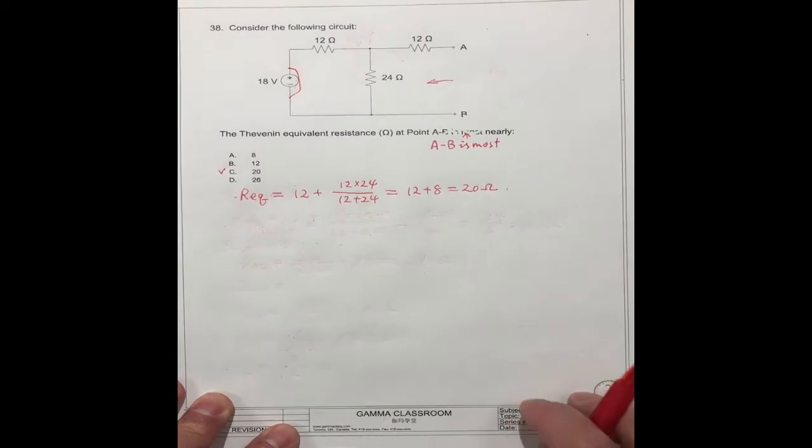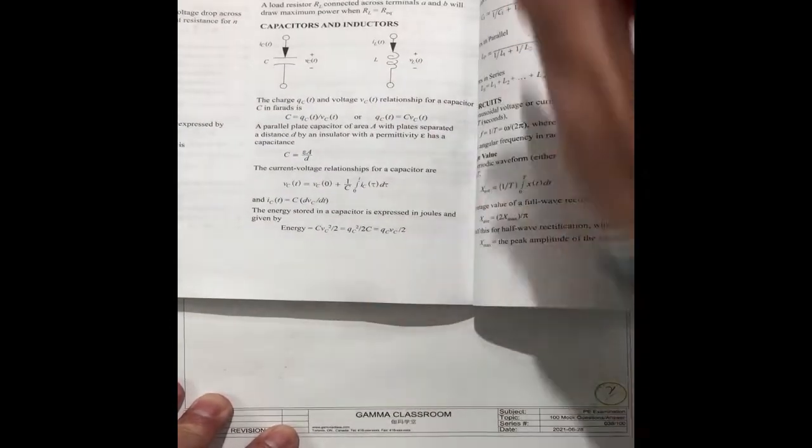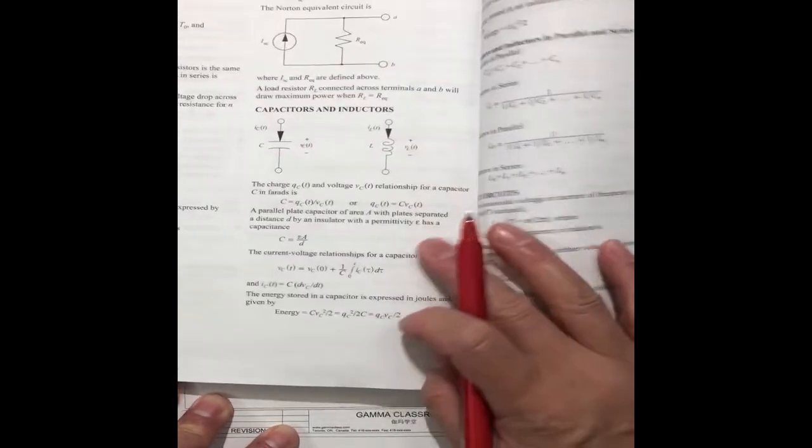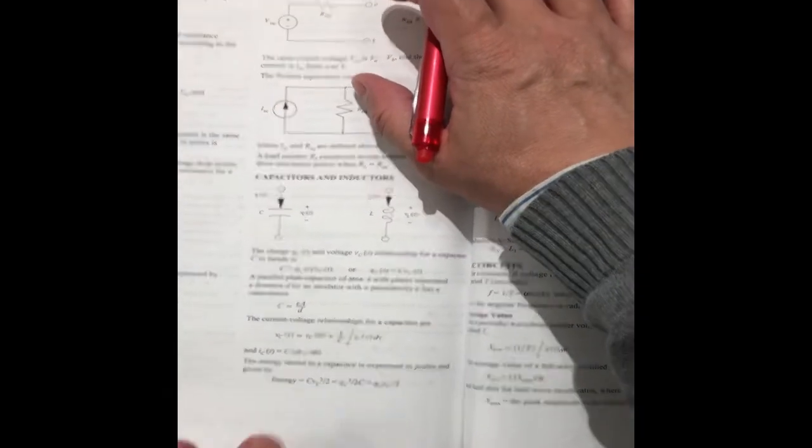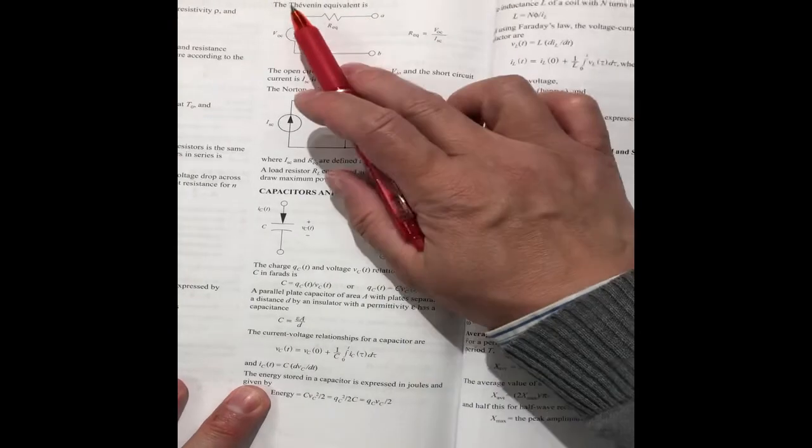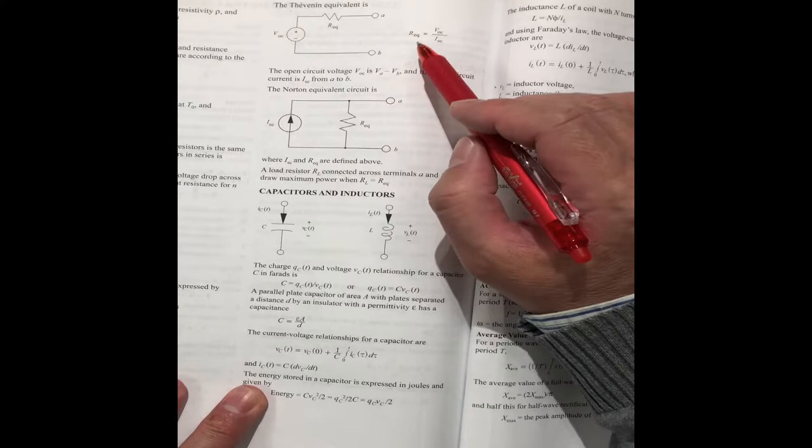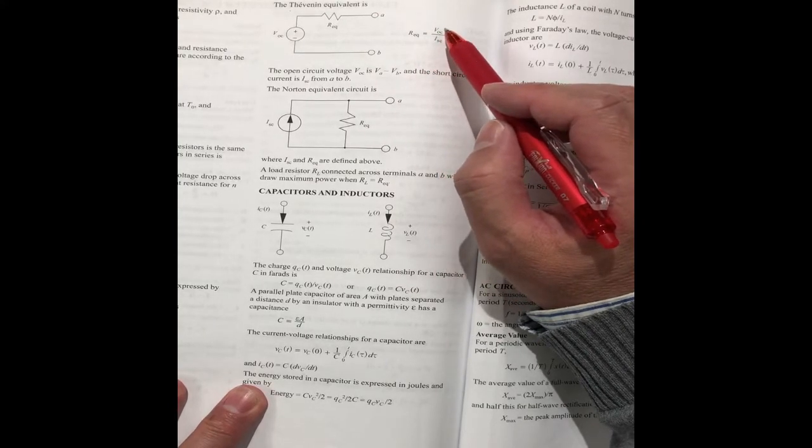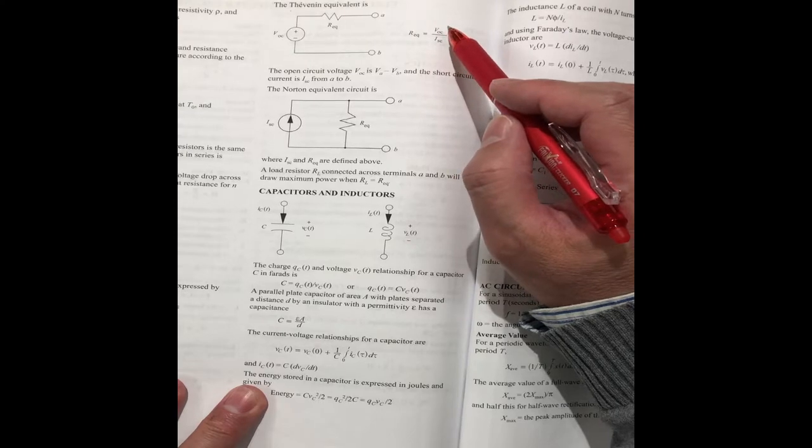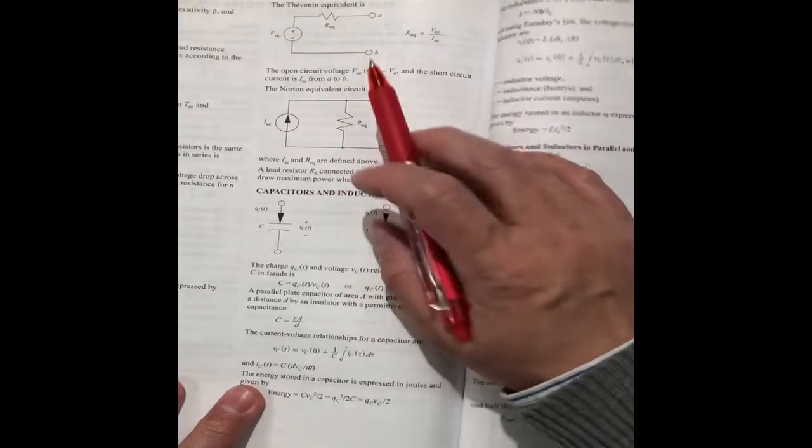Also, we can use the Thevenin equivalent definition to get the number. When you see the book 194 page, the Thevenin equivalent is R_EQ equal to V_OC, it's an open circuit voltage, divided by I_SC, the short circuit current.